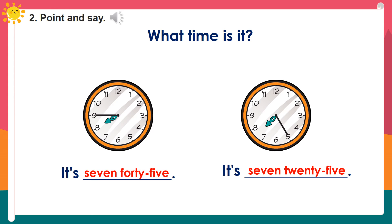What time is it? It's 7 o'clock. A: 7. B: 7:15. C: 7:25. D: 7:30. E: 7:45.